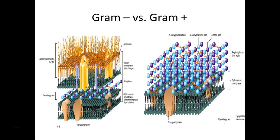When we gram stain gram negatives — crystal violet, then iodine, then decolorize — the outer membrane is very much disrupted, almost completely removed. Then they have only a very thin peptidoglycan layer, which is not enough to trap in the crystal violet-iodine complex, so they get washed out and are clear. That's why we counter-stain with safranin, a red dye. These damaged cells don't hold much of the red dye, so they appear a lighter shade of red — pink.